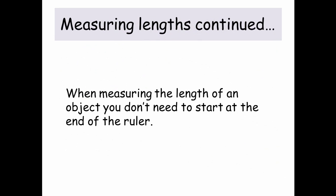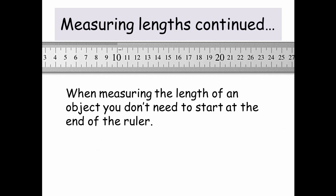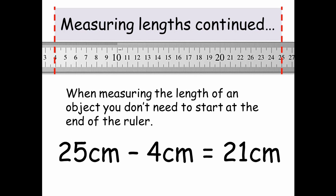Measuring Lengths Continued. When measuring the length of an object, you don't need to start at the end of the ruler. So here, if I want to measure my sign that says Measuring Lengths Continued, I could start from 4cm and finish at 25cm. And 25 minus 4 is 21, so the length of my sign would be 21cm.